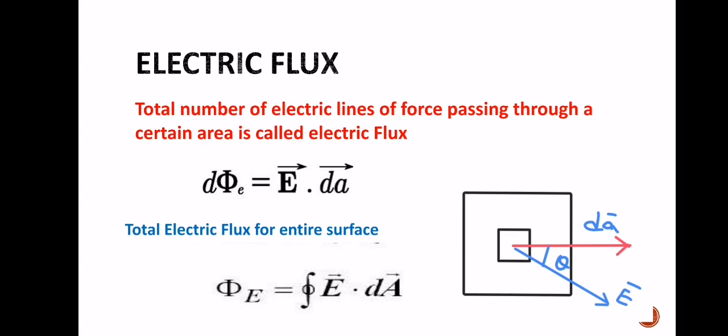As you can see in the figure, the electric field intensity is making an angle theta with the vector area. The direction of the vector area is normal to the surface. The value of the electric flux depends on the angle between the vector area and the electric field intensity — it can have maximum, minimum, or any value by putting the value of theta.